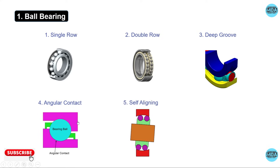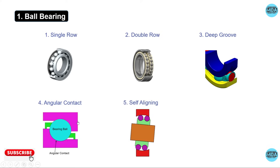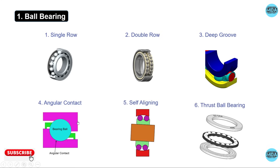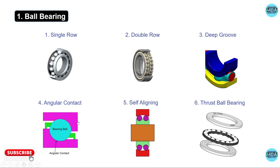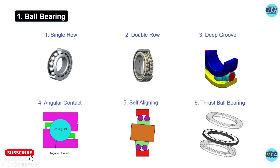The self-aligning ball bearing is used where there is angular misalignment of the shaft with the housing. The thrust ball bearing is used to handle axial load only, and it is available in single and double direction variants.